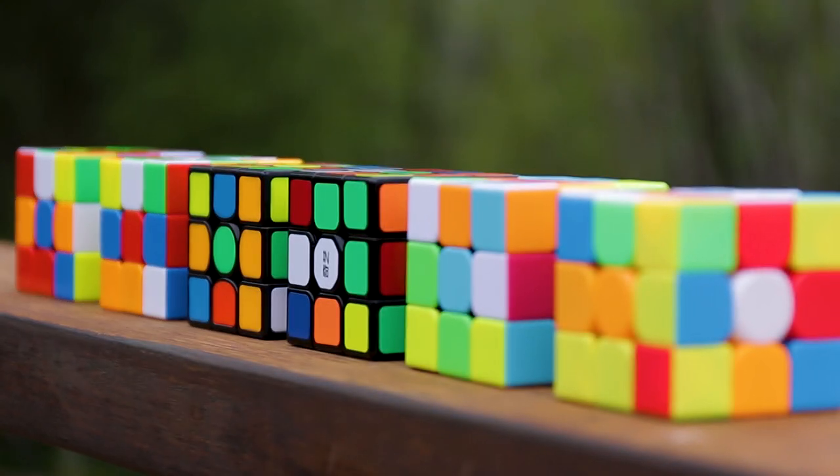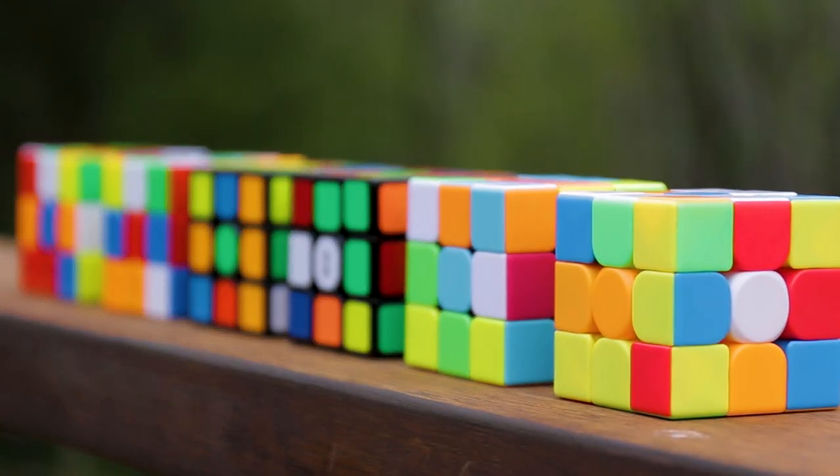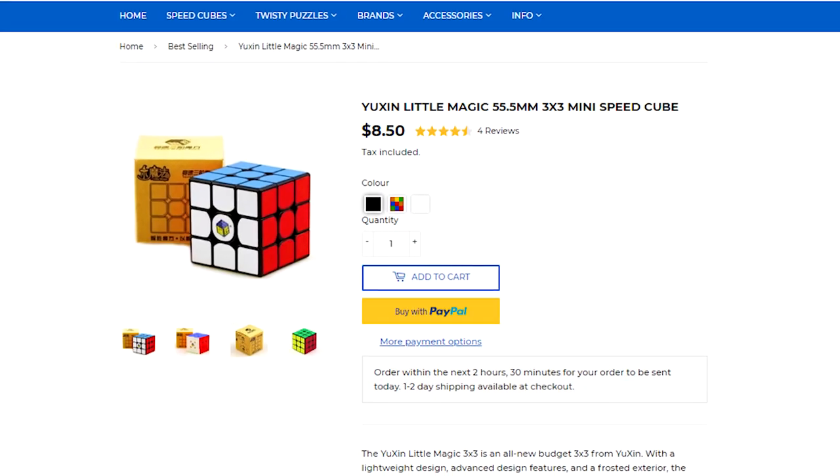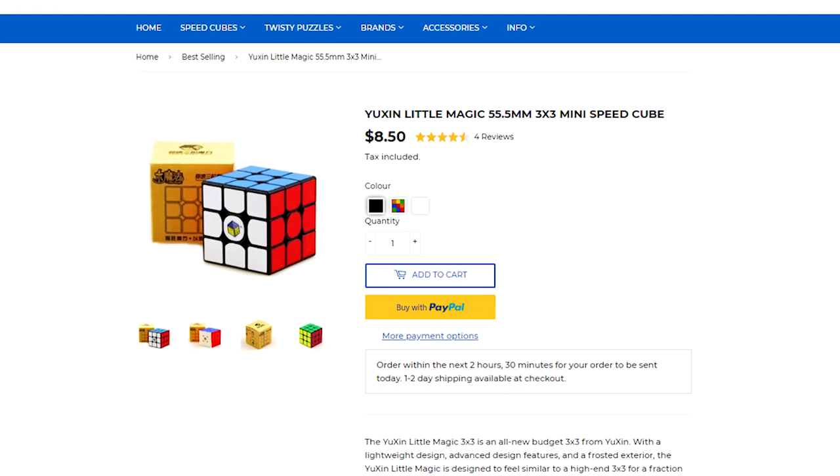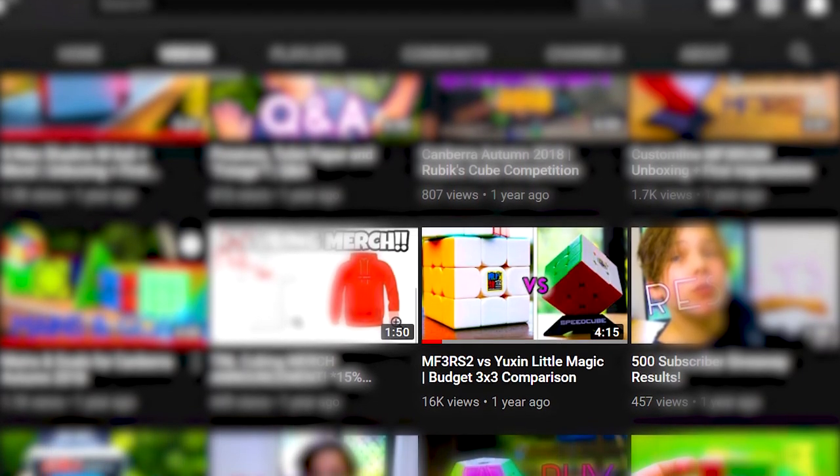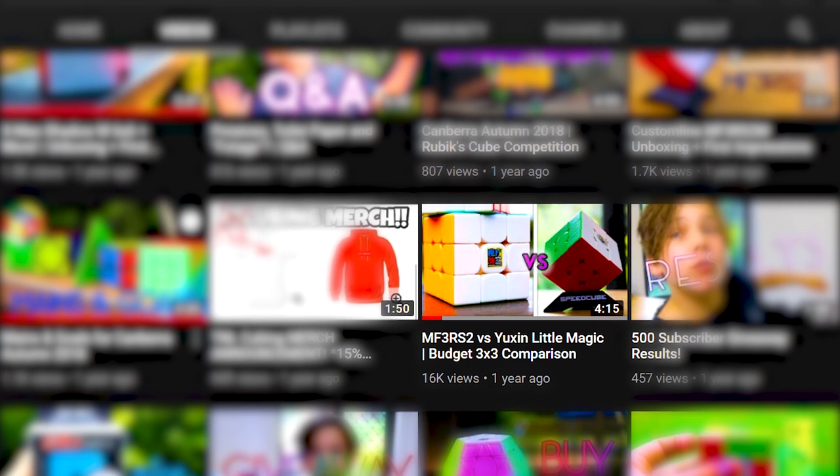Before we get into the next major price point, it's fair to mention that for a dollar or two more than the aforementioned puzzles, the MF3 RS2 and Yushin Little Magic are also great budget 3x3s. You can check out my comparison I did of them in the past in the description if you want more information, but you're paying more and they still aren't magnetic.